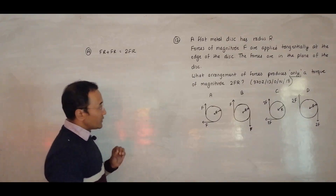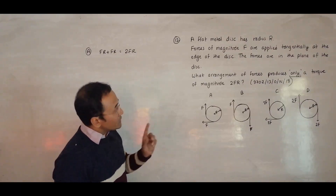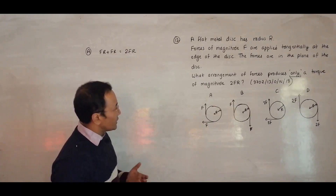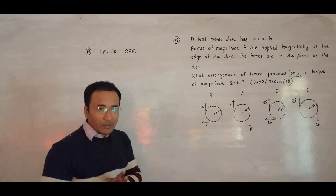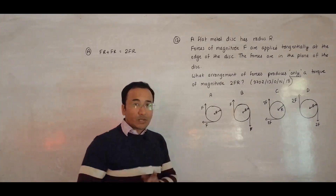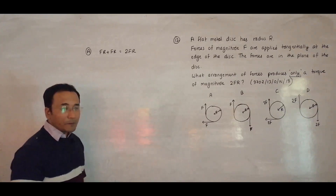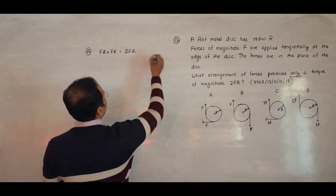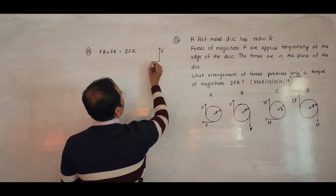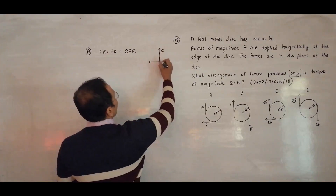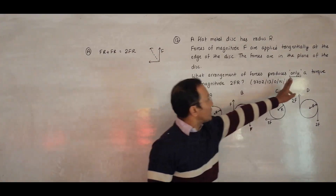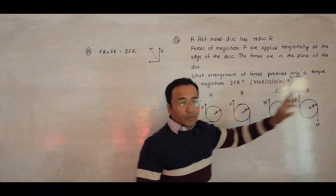The torque is 2FR, but the question says 'only a torque.' We need to check whether it also produces a resultant force. It does — one force points one way and the other points differently, producing a resultant force. So choice A is incorrect.